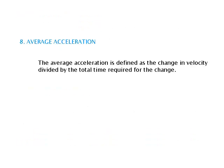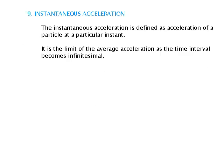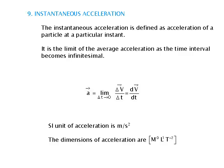Average Acceleration is defined as the change in velocity divided by the total time required for the change. A_average is equal to (V2 − V1) upon (T2 − T1), which is equal to ΔV upon Δt. Instantaneous Acceleration is defined as the acceleration of a particle at a particular instant; it is the limit of the average acceleration as the time interval becomes infinitesimal. A = dV/dt. The SI unit of acceleration is meter per second square, and its dimensions are M⁰L¹T⁻².